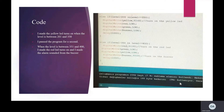I made the yellow LED turn on when the level is between 201 and 350, then paused the program for one second. I made the red LED turn on and triggered the alarm sound from the buzzer when the level reaches the full range, then paused for one second.